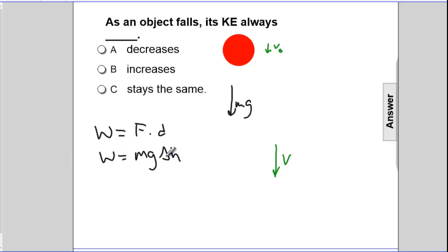So the work is the change in potential energy. It's losing potential energy, but it's gaining KE.